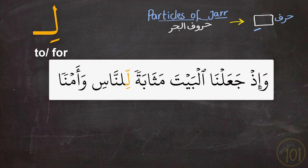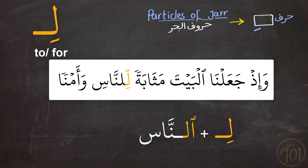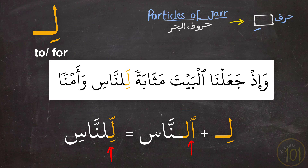Finally, when لام is added to a noun that starts with the definite article أَل, the همزة from the definite article is completely dropped. For example, the word النَّاس starts with همزة الوصل and لام, but when we add the particle لِ to the beginning, it becomes لِلنَّاسِ — written without همزة الوصل at all. The reason is simply that همزة الوصل is dropped when the word is attached to anything before it.